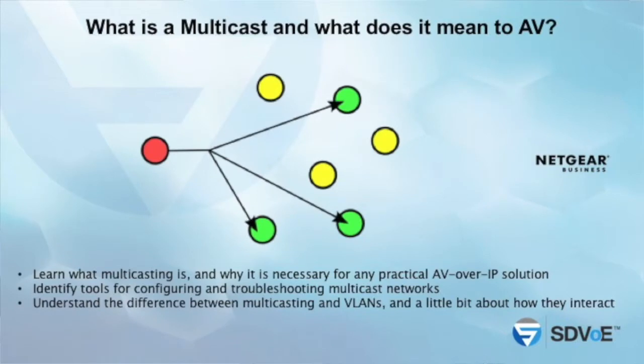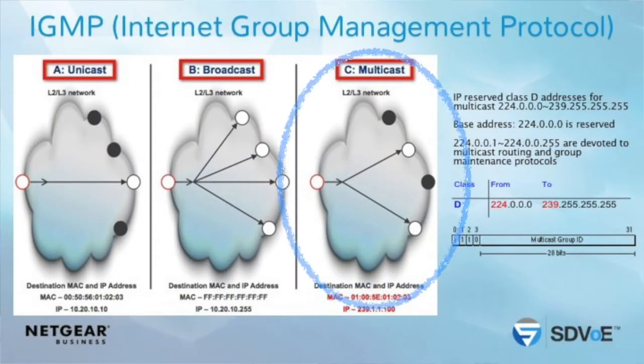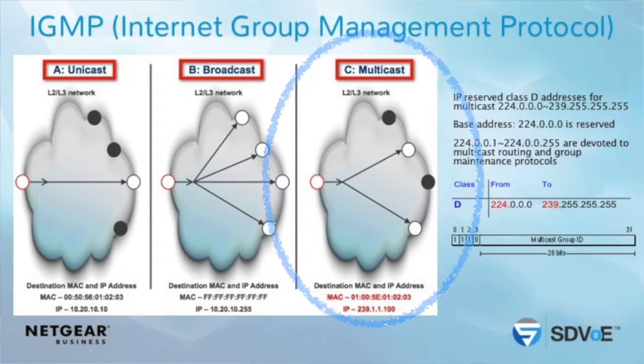Multicast Ethernet is what video over IP is about. Any video over IP installation will do multicast. So what is multicast? In Ethernet networks, you have three types of communications. One of them is called multicast — it's basically one to many.